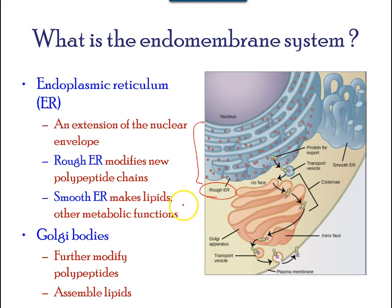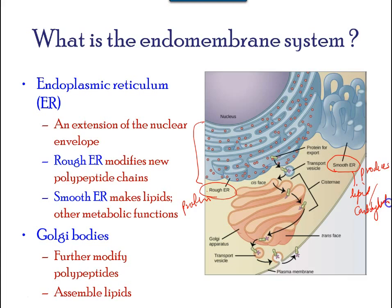The smooth endoplasmic reticulum, or SER, is continuous with the RER but has few or no ribosomes on its cytoplasmic surface. The SER's functions include synthesis of carbohydrates, lipids including phospholipids and steroid hormones. It also plays a role in detoxification of medications and poisons — for example, alcohol metabolism — and is involved in storage of calcium ions.